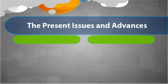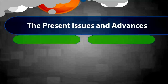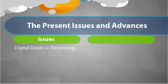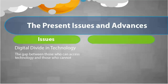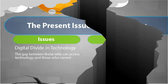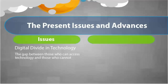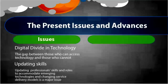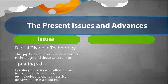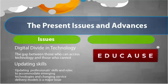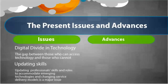Presently, the field of educational technology is facing many issues and advances. Here are some of the many issues. Digital divide in technology — simply stated, it's a gap between those who can access technology and those who cannot. Another issue is updating skills. Updating professional skills and roles to accommodate emerging technologies and changing service delivery models is a major issue. Recently, Educause named this as the number one issue for professionals. While there are many issues, there is also progress.